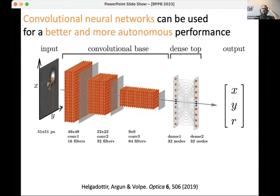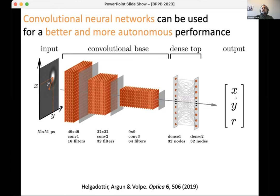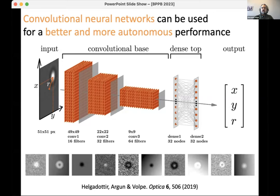We decided to use a convolutional neural network — the standard workhorse for image processing in deep learning. The idea was to input an image of a particle and get at the output the position of the particle. The obvious problem is that you need to train the neural network, and for that you need millions of images with known ground truth. But if you know the particle position in your image, you don't really have a problem to solve. So what did we do? We used simulated images, where we knew the ground truth and could generate as many as needed. Training on these, we got something that worked extremely well.